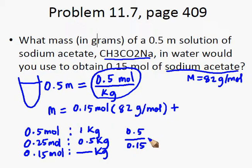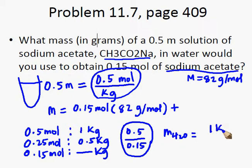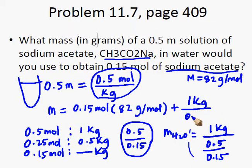Knowing this factor, we can then know the amount of water by dividing 1 kilogram with this factor, 0.5 over 0.15. We can then use this expression and plug it into our equation. It is 1 kilogram over 0.5 multiplied by 0.15. Notice that 0.15 went on top in the numerator.